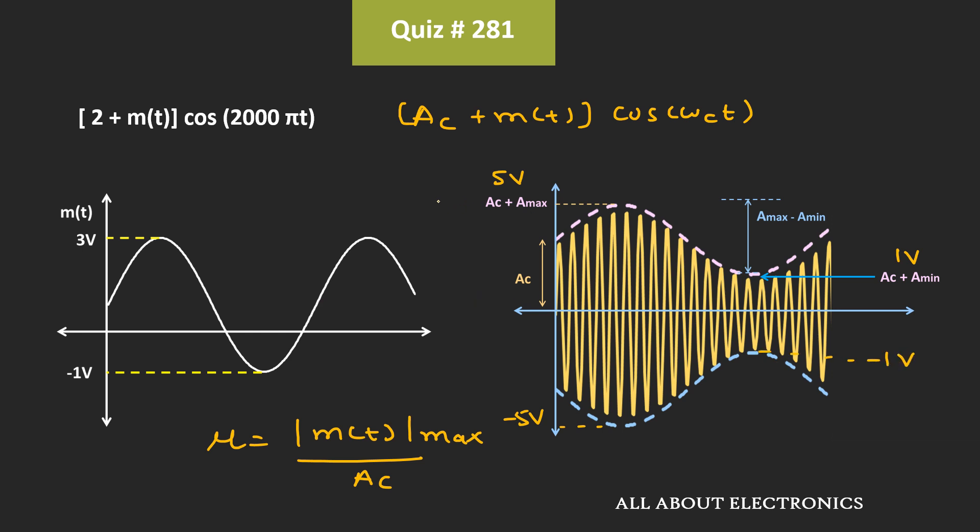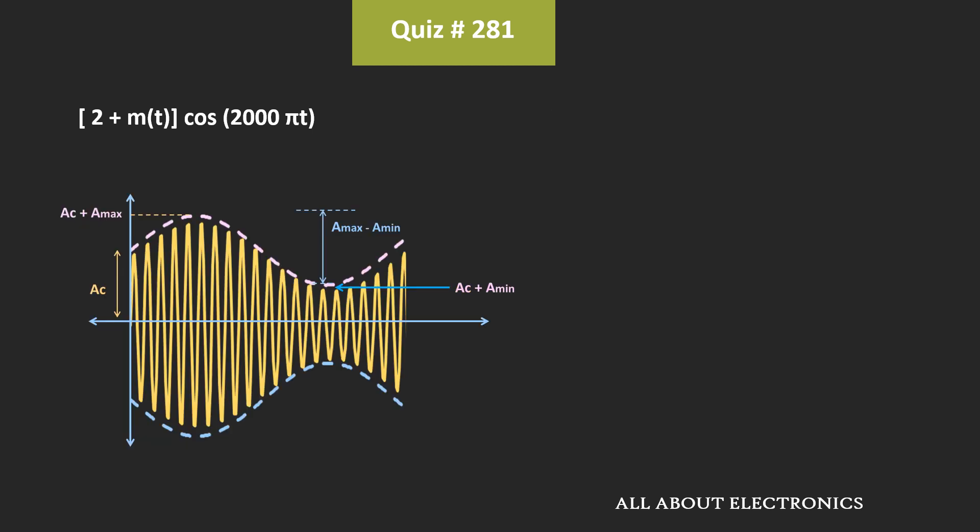So here, let's call this point as Emax, while this point as Emin. That means in this case, the modulation index μ can be given as Emax minus Emin divided by Emax plus Emin.